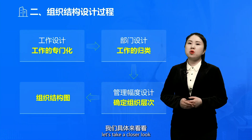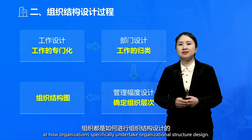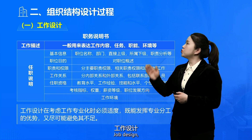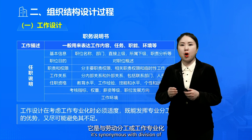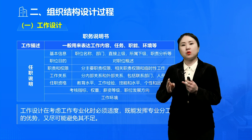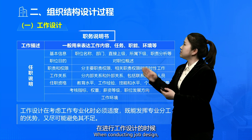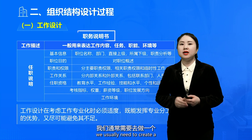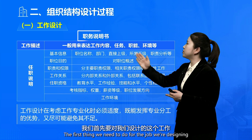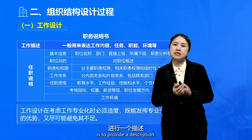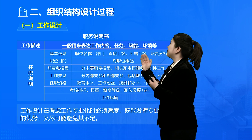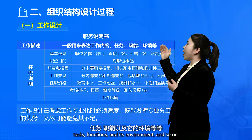Let's take a closer look at how organizations specifically undertake organizational structure design. First, what we need to do is job design. Job design is synonymous with division of labor or job specialization — for example, production workers, office staff, and so on. When conducting job design, we usually need to create a job description. When preparing job descriptions, the first thing we need to provide is a description of the job, mainly expressing the content of our work, tasks, functions, and its environment.